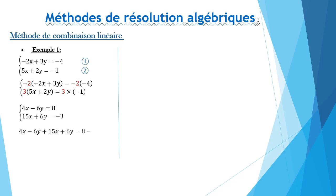En addition membre à membre, on simplifie et on trouve une équation avec une seule inconnue. Maintenant, on peut découvrir la valeur de X. X vaut 5 sur 19.